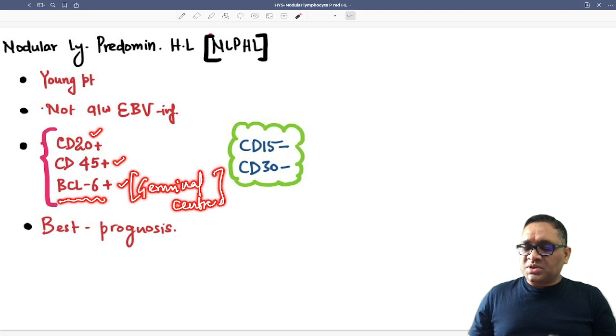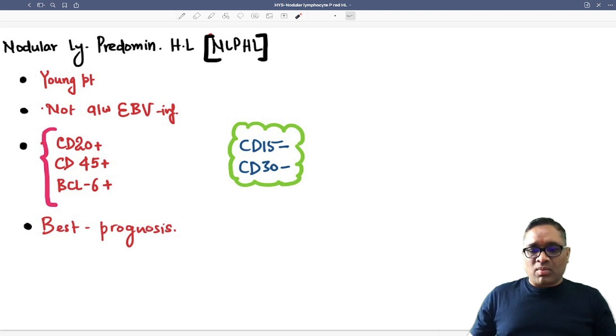BCL6 positive because they are arising from the germinal center, and when we compare the prognosis, this will be having best prognosis amongst all types of Hodgkin's lymphoma.